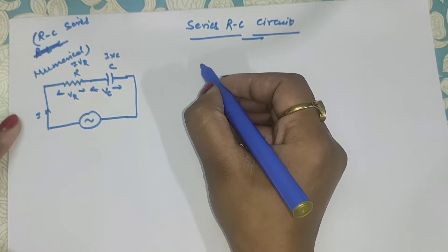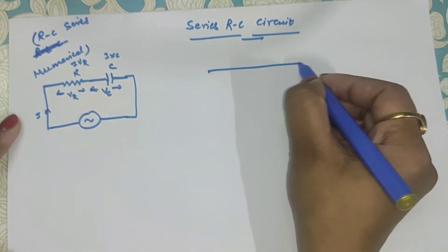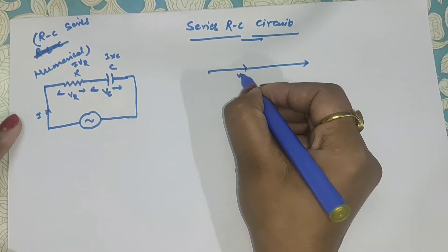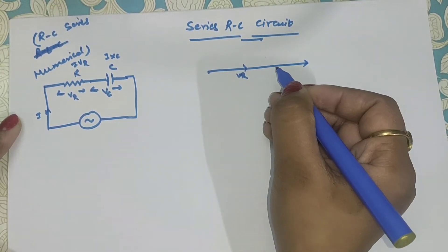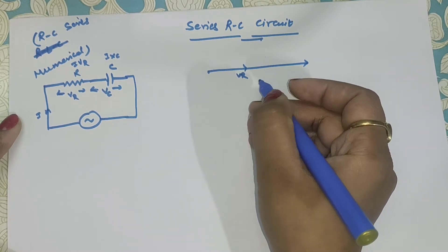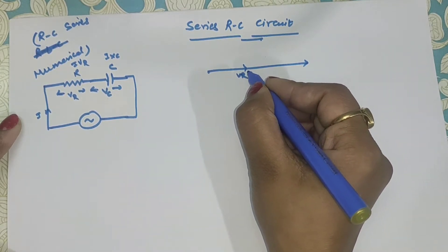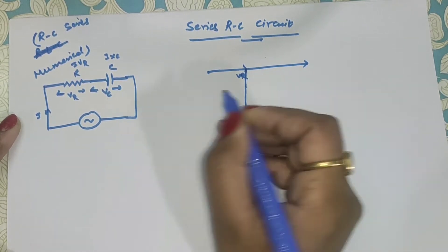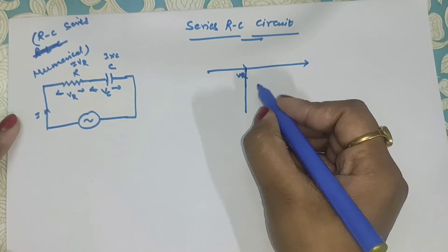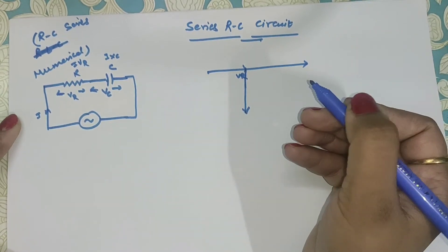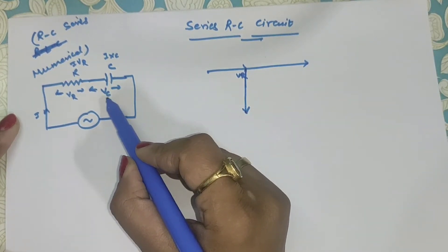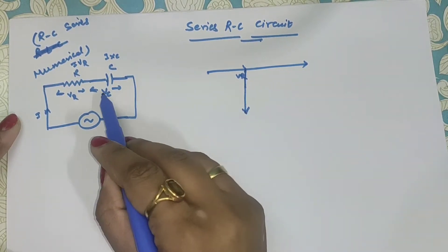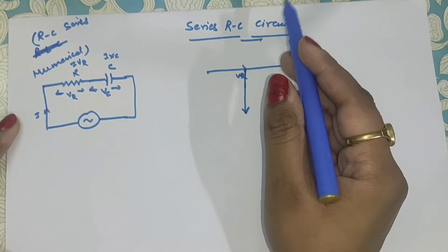If we make a phasor diagram, we are taking I as a reference. VR will be in phase with the current — I told you about the phasor diagram earlier, so please go and check that video. Now VC will be lagging with the current; the voltage of the capacitor will lag with the current.